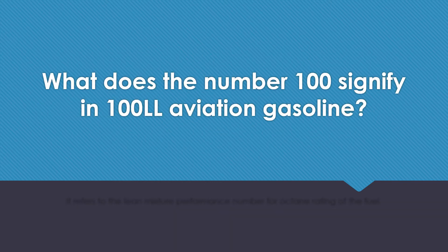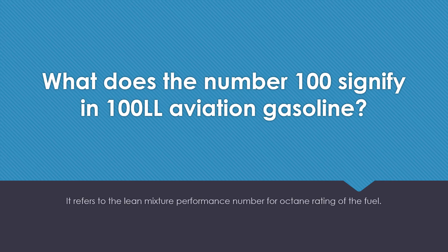What does the number 100 signify in 100LL aviation gasoline? It refers to the lean mixture performance number, or octane rating, of the fuel.